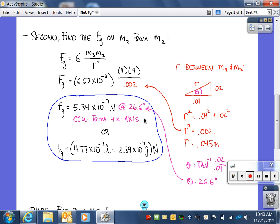So our force is at 26.6 degrees counterclockwise from the positive x-axis. In unit vector notation, that would turn into 4.77 times 10 to the negative 7th i plus 2.39 times 10 to the negative 7th j newtons.